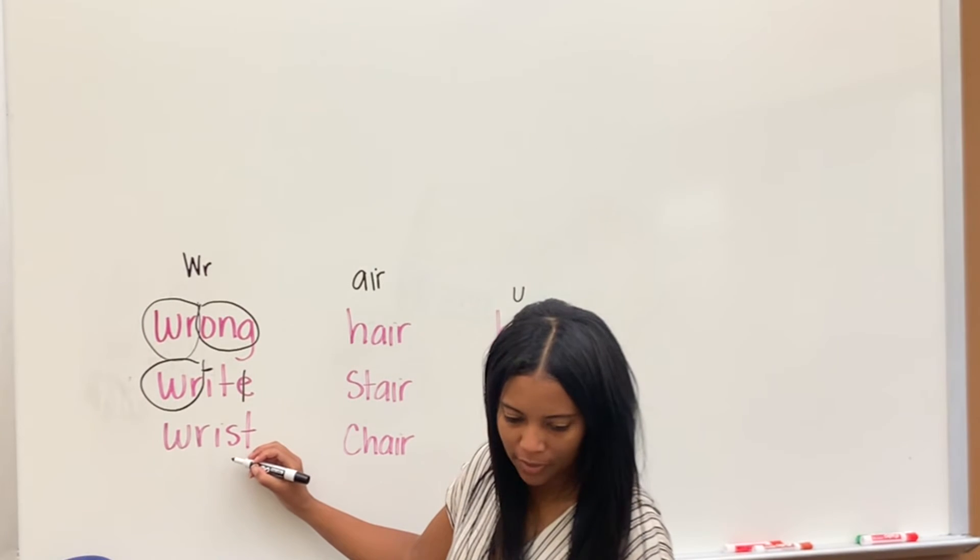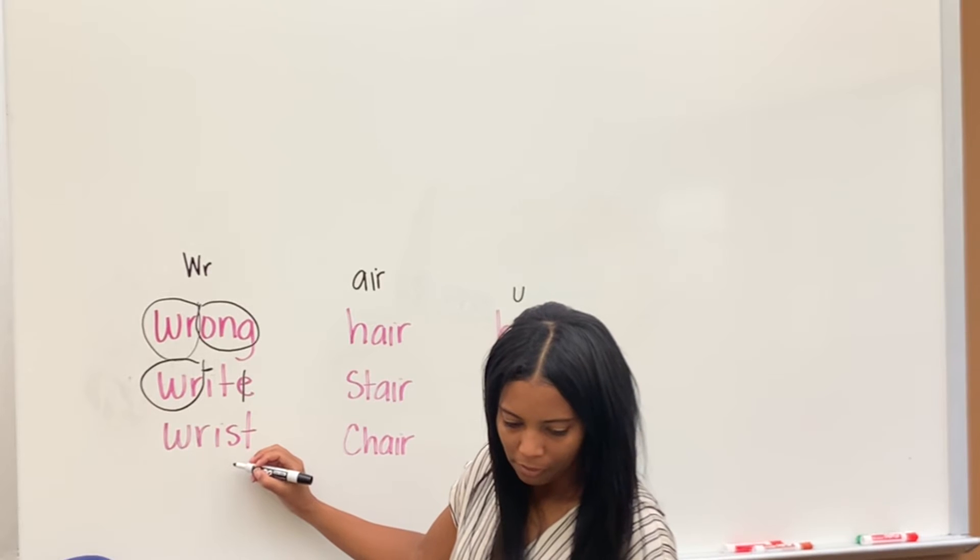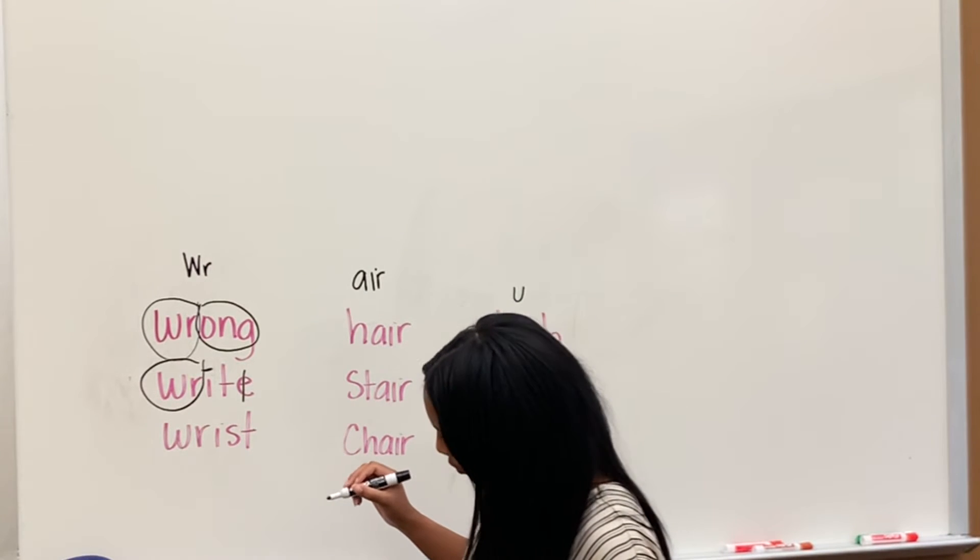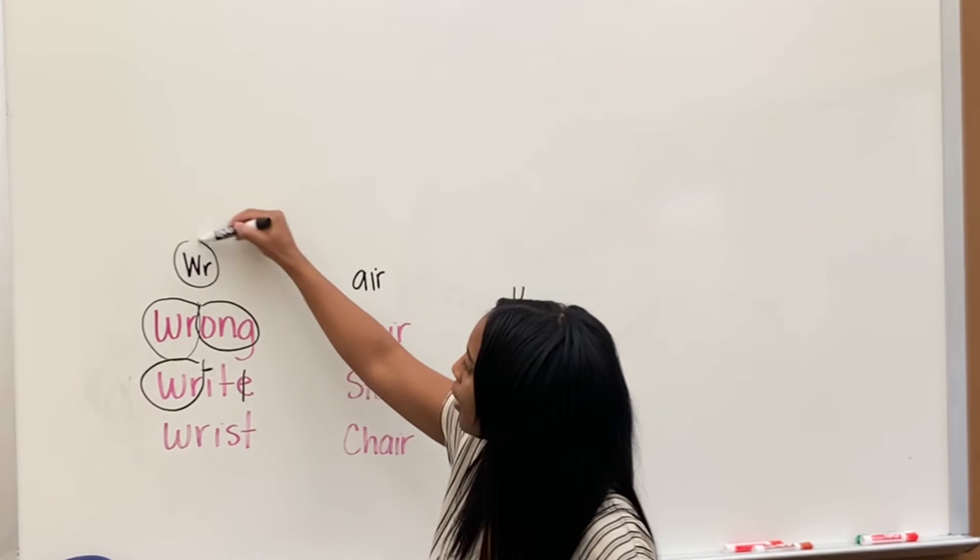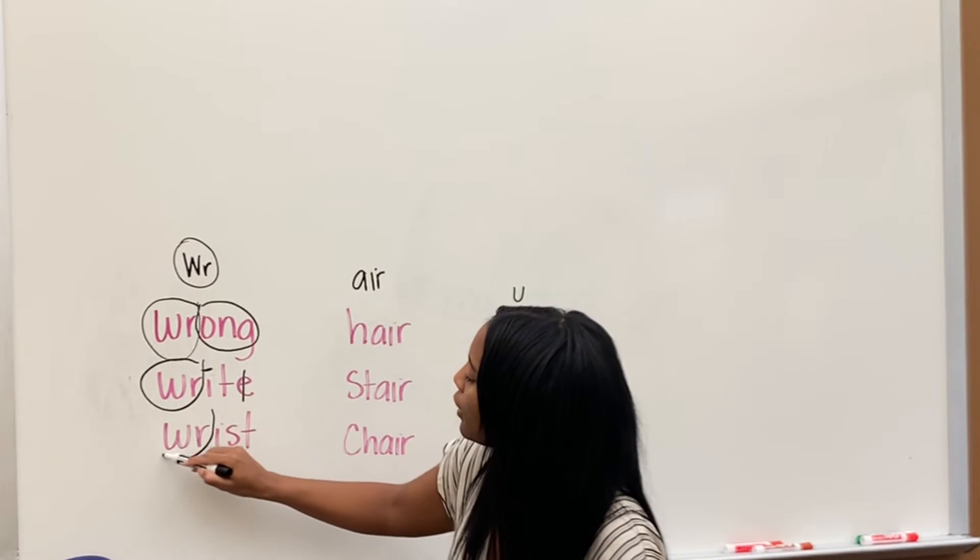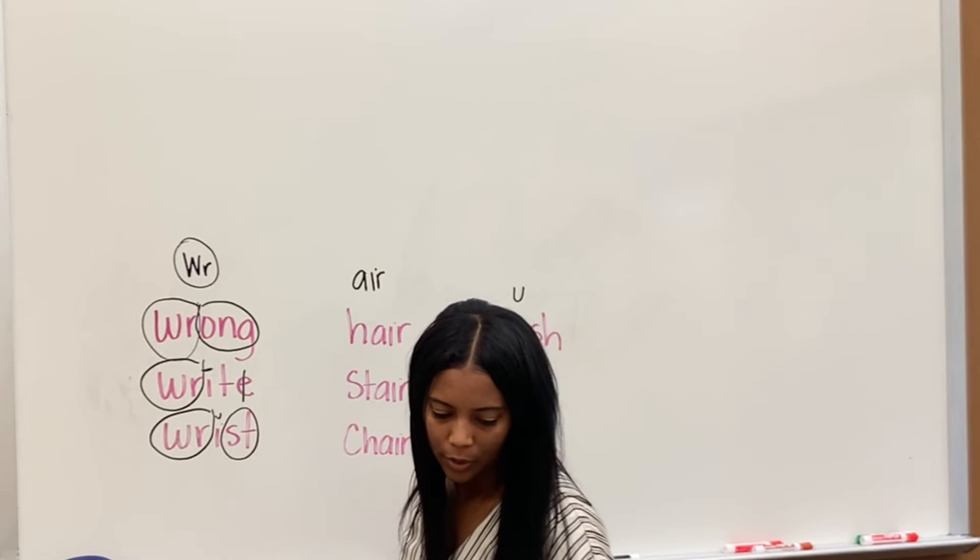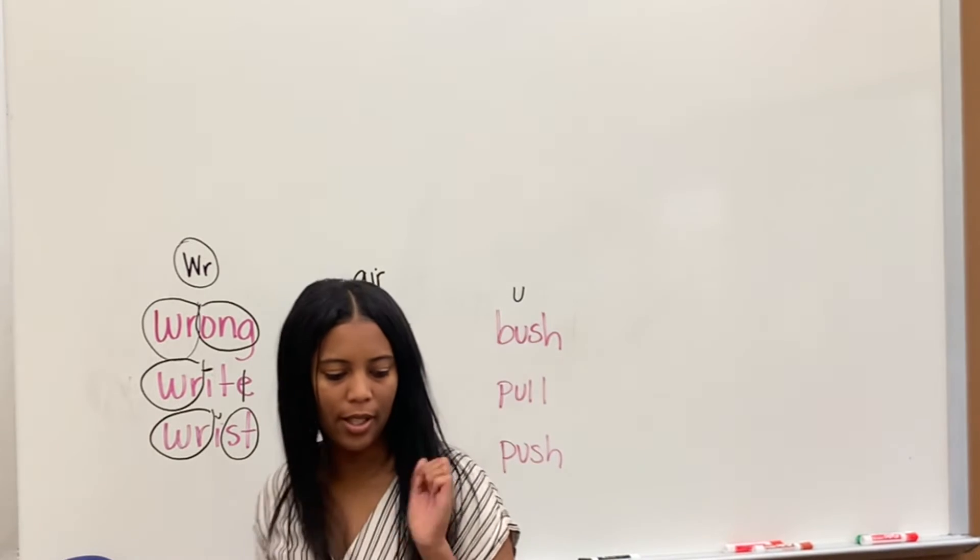Anyone like to read this one? Okay, Solomon, what are the sounds? R-I. No, WR. WR. And good, what's the word? Wrist. Wrist, like your wrist.